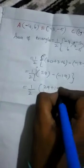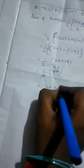Now 1/2, and this minus into minus becomes plus. So 1/2 of (29 + 19). Add 29 and 19, you will get 48. Now divide by 2: you will get 24 square units.